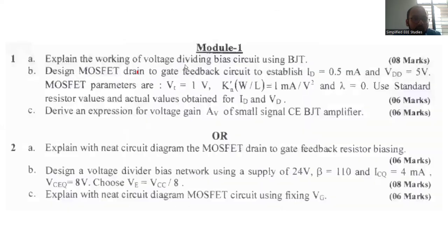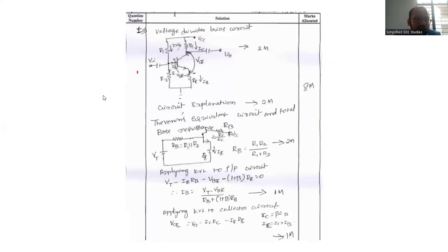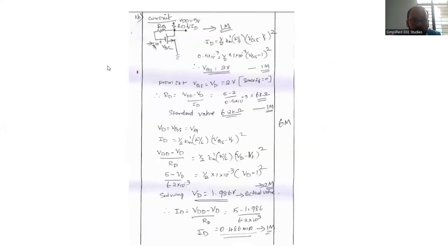Now let us move on to question number 1B. Design MOSFET drain-to-gate feedback circuit where the drain current is equal to 0.5 milliampere, VDD is 5 volt. MOSFET parameters are already given. Use standard resistor values and compute actual values for ID and VD. Given the data, you have to draw one MOSFET circuit diagram. If you draw this diagram you will be getting one mark.